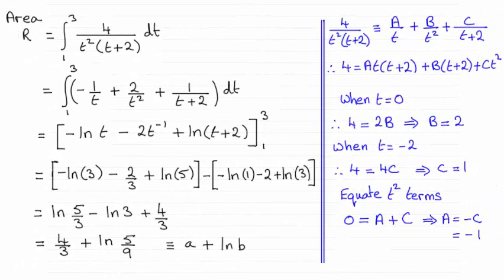Hi there. Now for this part, we had to work out the area of R. Show that it reduced down to this form A plus natural log of B, where A and B were rational numbers. The answer turns out to be 4/3 plus the natural log of 5/9. So I'll take you through this as usual just in case there were any problems.